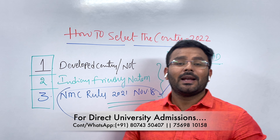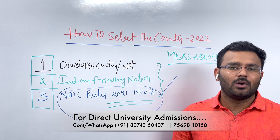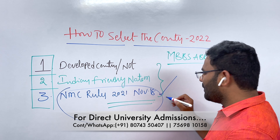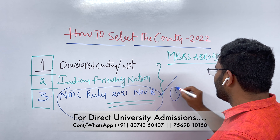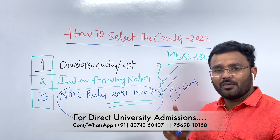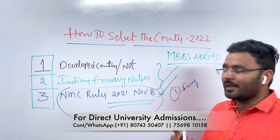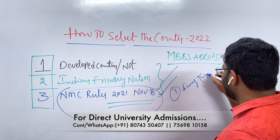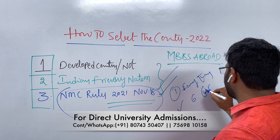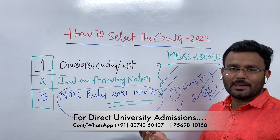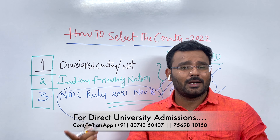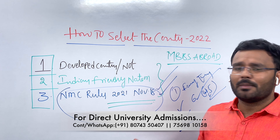Number three is NMC rules. Yes, Russia is 100% compliant. NMC rules are followed — Russia is the first country in the world to follow them. Most universities are fully English medium. Russia's MBBS is 6 years — four and a half years plus one and a half years internship. The degree is equivalent, meaning Russia's degree is the same as an Indian degree under NMC rules.